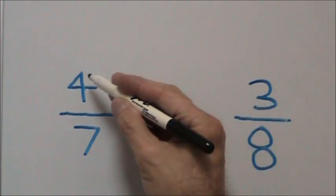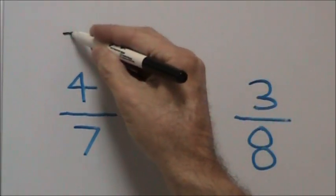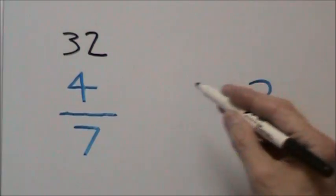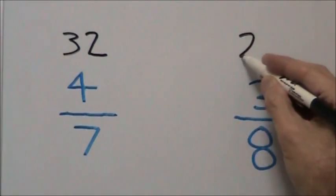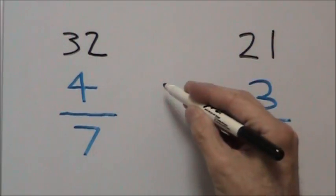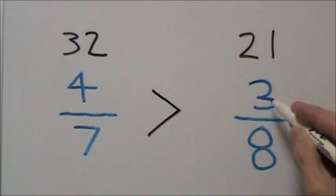We start at the top left with our four, multiply by eight to get thirty-two. Next we go to our three, multiply it by seven to get twenty-one. Since thirty-two is greater than twenty-one, four-sevenths is greater than three-eighths.